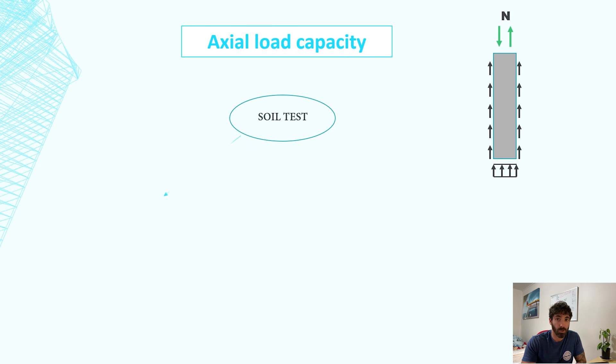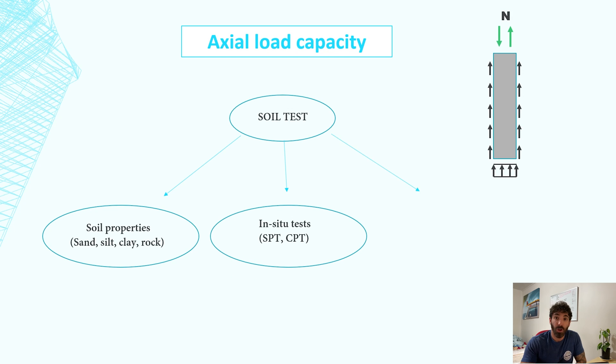Let's begin with axial loads, which is a little bit easier than lateral. You can do an analysis based on soil properties for cohesionless or cohesive soils or rock. A second option would be in-situ tests like SPT and CPT, or if it's a large project you might choose a more expensive method like full-scale load tests, which could be a controlled stress test or controlled strain test.